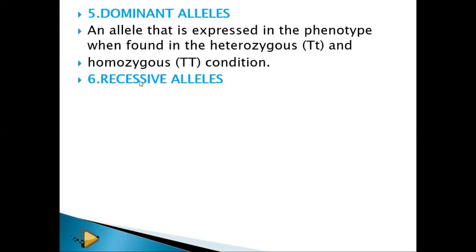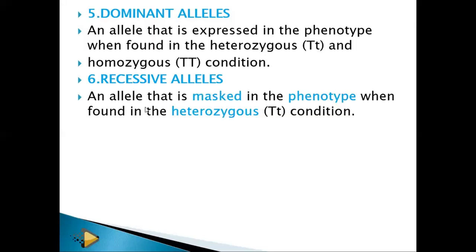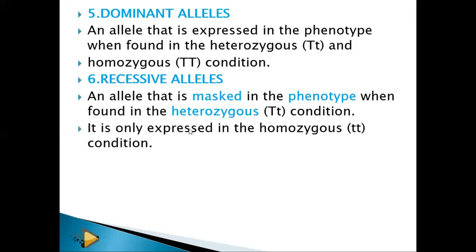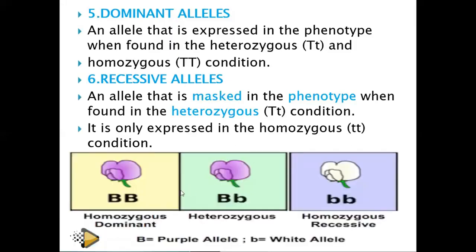A recessive allele can only express itself in the absence of the dominant allele. It is masked in the phenotype when found in a heterozygous state, and it is only expressed in a homozygous condition — when two copies of the recessive allele are present.